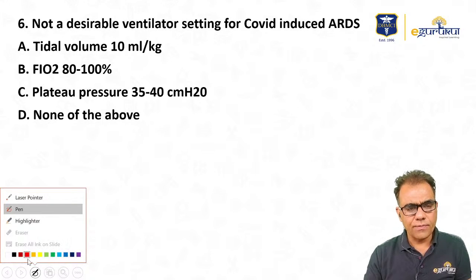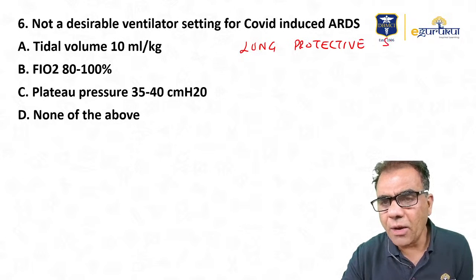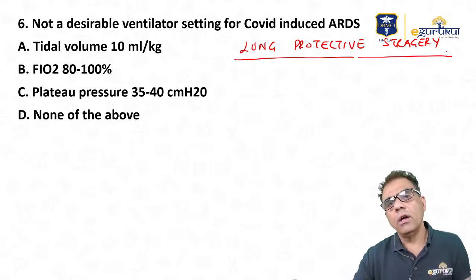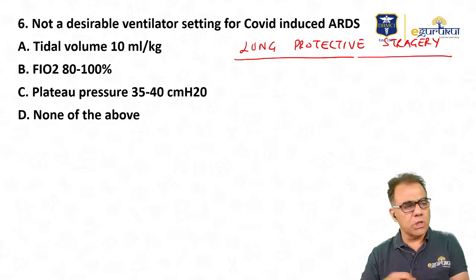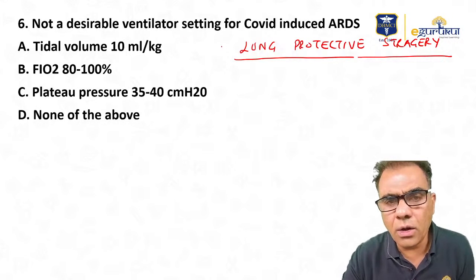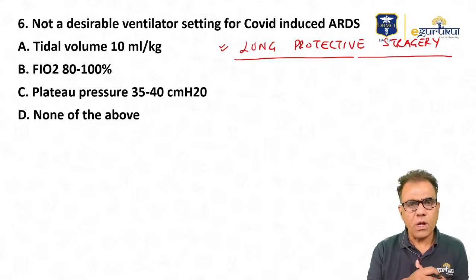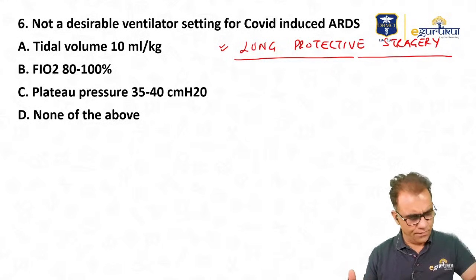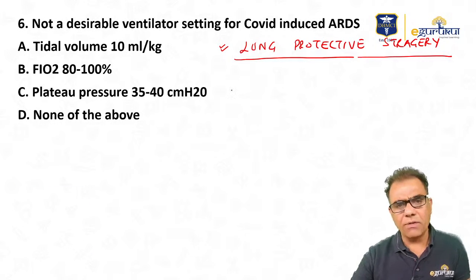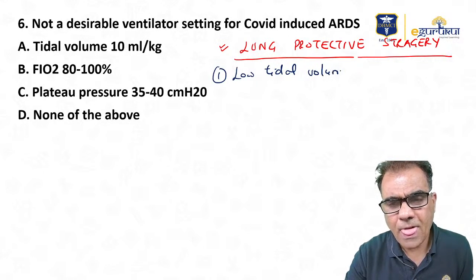Lung protective strategy — the most important component is low tidal volume. The definition of low tidal volume is 4-6 ml/kg of ideal body weight, not actual body weight. If a patient weighs 150 kg, we do not give 600 or 750 ml — we use the ideal weight for that height. There are formulas and charts from which we can calculate ideal body weight.